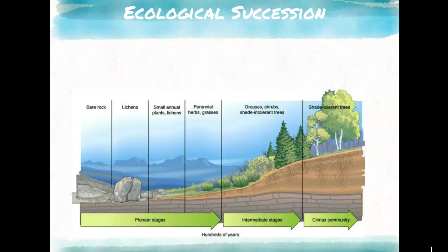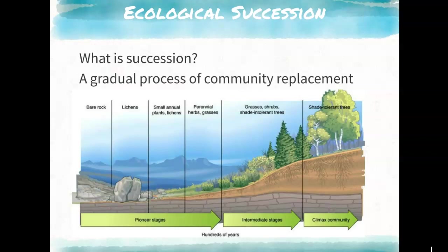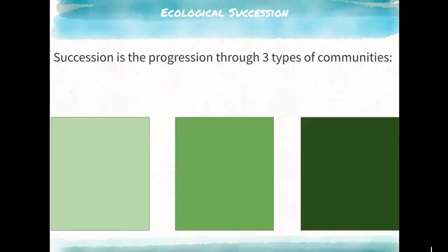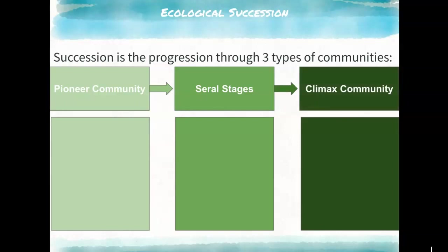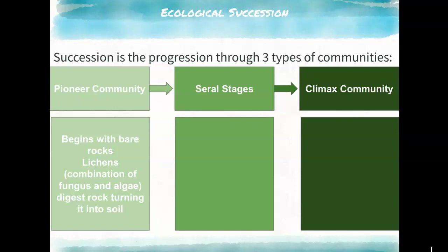Ecological succession describes how an ecosystem grows back after something bad happens to it — the gradual progression of replacing one community of species with another until returning to normal. There are three stages: the pioneer community, seral stages, and the climax community. Starting from bare rock, the pioneer community is lichen, which digests rock to create soil. Then grass, shrubs, and small trees grow through the seral stages.